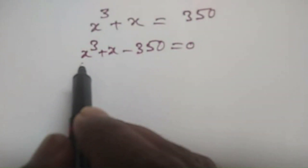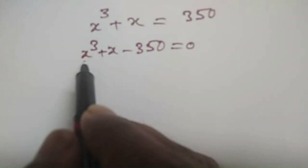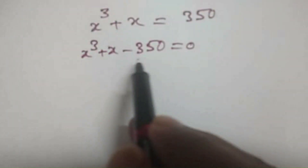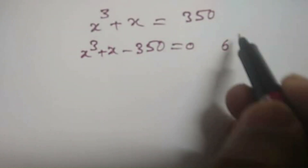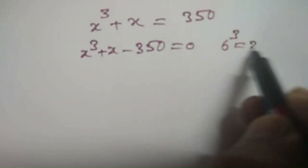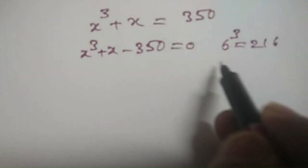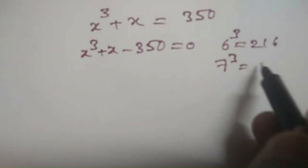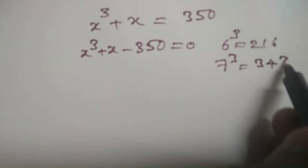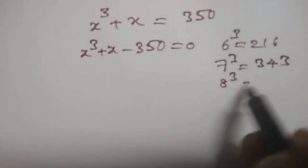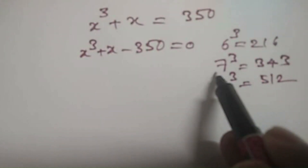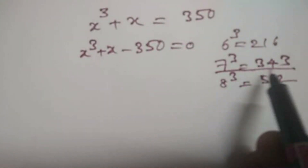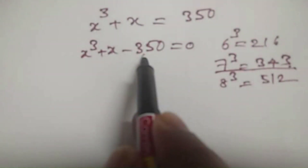Now this equation is a cubic equation. Let's find a perfect cubic number which is near to 350. You know that 6 cubed is equal to 216, 7 cubed is equal to 343, and 8 cubed is equal to 512. So from this it is clear that 7 cubed, 343, is very near to 350.